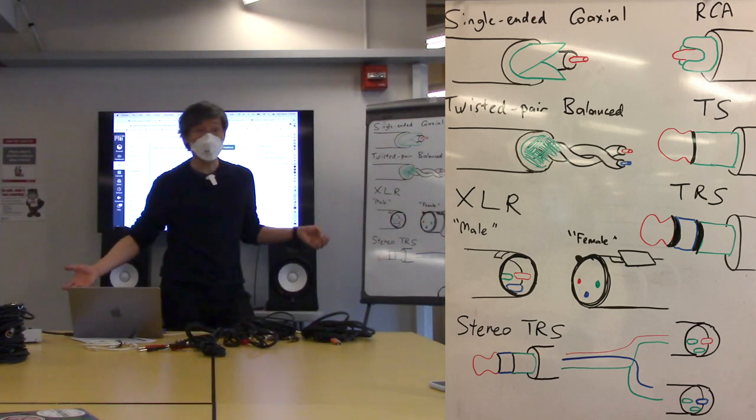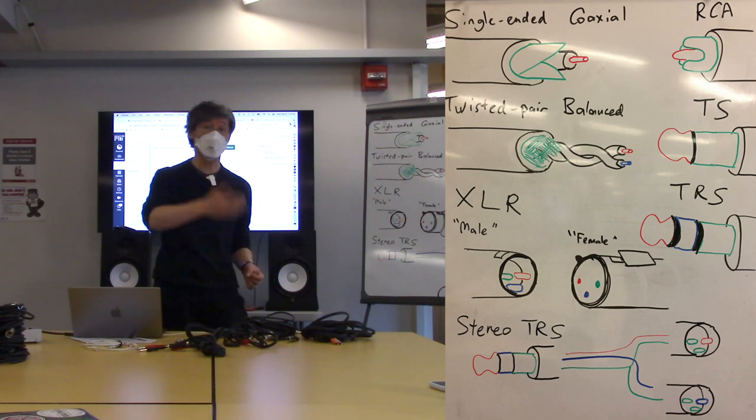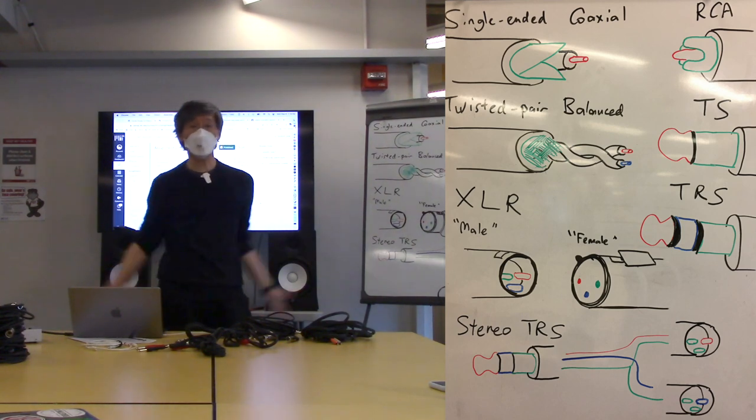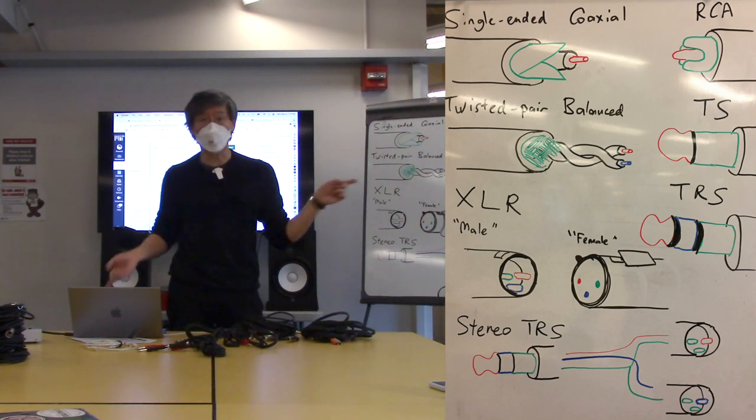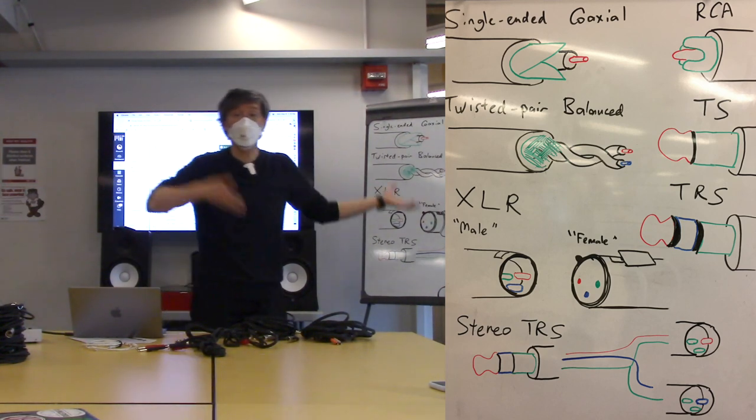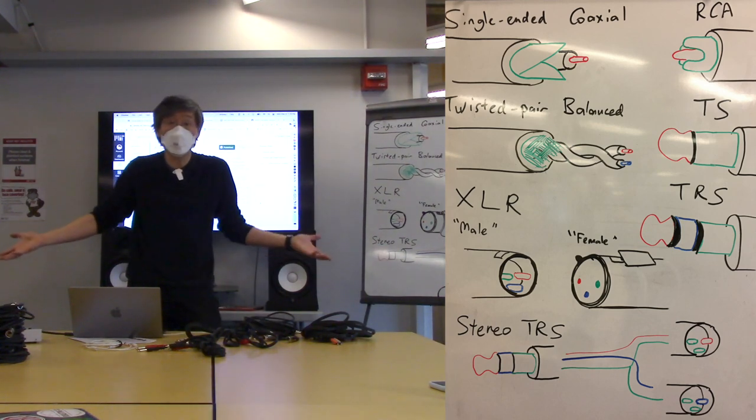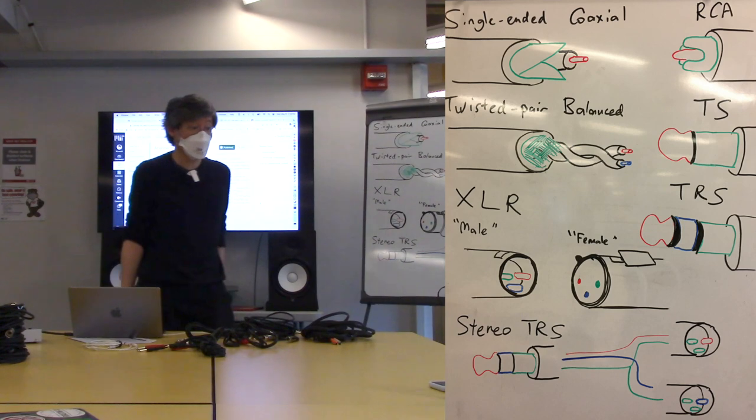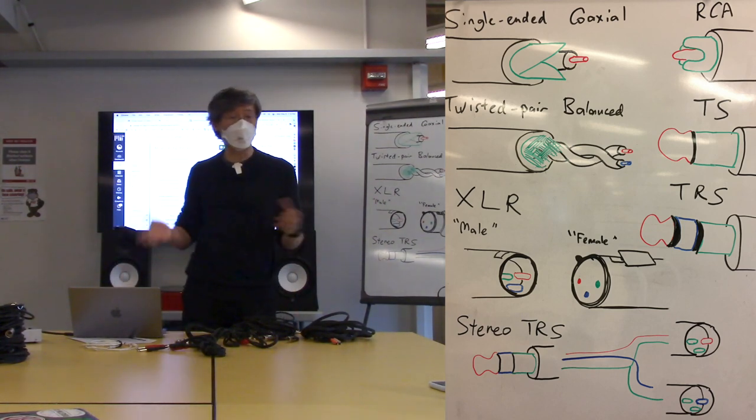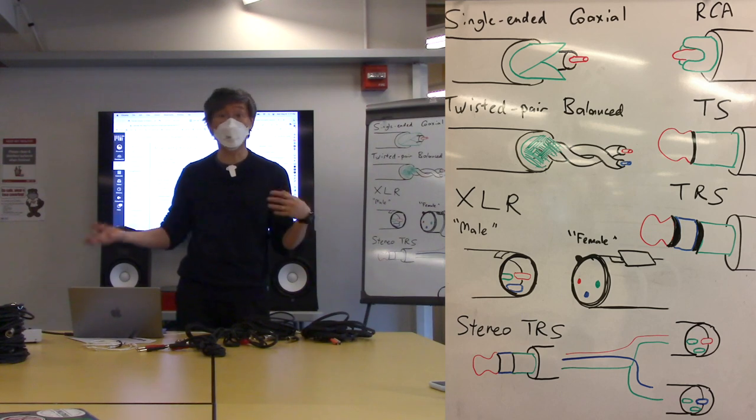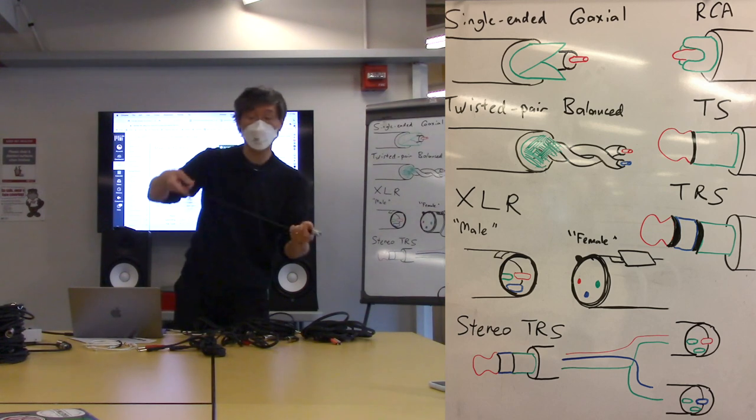It's referred to as male and female. If you look really closely, you might actually be able to see each one of those pins has a number. One, two, and three. Number one is always the shield. Number two typically is the positive signal. Number three is the negative signal. But because of the way how this topology works, if you switch number two and three, it will still work.